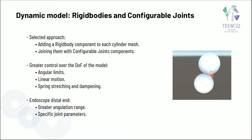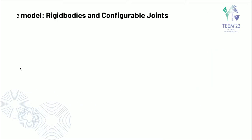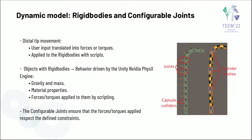Furthermore, a more specific parametrization for the distal end could be achieved, as it has a greater angulation range and is controlled by endoscope wires. For the movement of the distal end, user input is translated to forces and torques via a script and applied to the rigid bodies of the cylinders. As objects with rigid bodies, the cylinders' behavior is driven by Unity's wrapper of the NVIDIA physics engine, including gravity, mass, and impulses resultant of the applied forces and torques. The configurable joint ensures that resultant impulses respect the defined constraints, keeping the cylinders joined and maintaining the tubular shape.